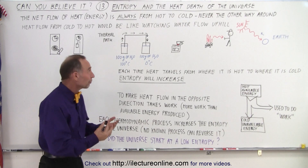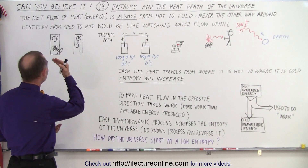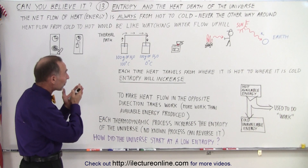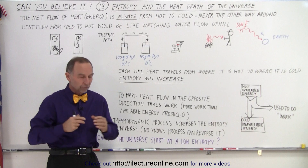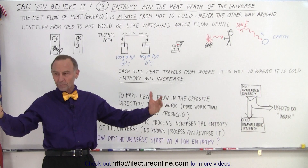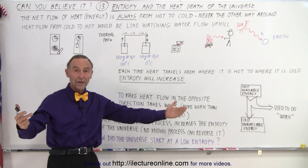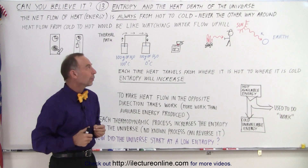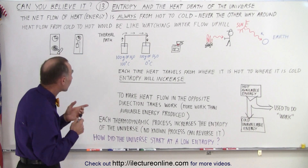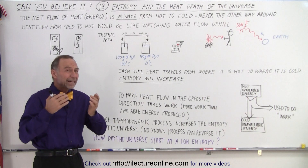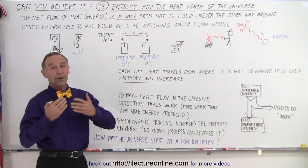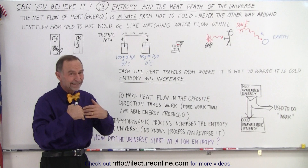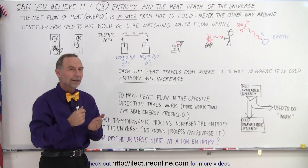We know from the laws of physics that net heat flow will always go from hot to cold, not the other way around. So if there's a hot object and a cold object in the room, heat will always travel from the hot to the cold object. Heat flow from cold to hot would be like water running uphill — something you will never see, and you will never see net heat traveling from where it's cold to where it's hot.